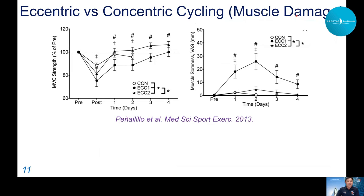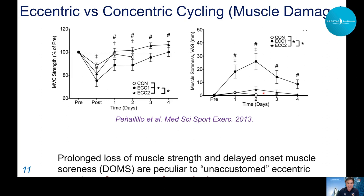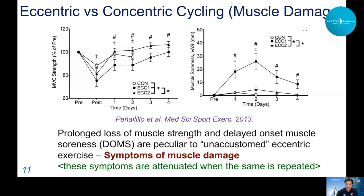One negative aspect of eccentric exercise can be muscle damage. Comparing eccentric and concentric cycling for strength loss and DOMS: after eccentric cycling, strength loss was greater and recovery was slow. After concentric cycling, strength loss was much smaller and returned to normal quickly. However, if the same eccentric cycling was repeated two weeks later, strength recovery was much faster and muscle soreness did not develop after the second bout.